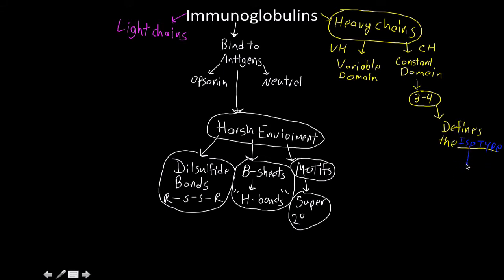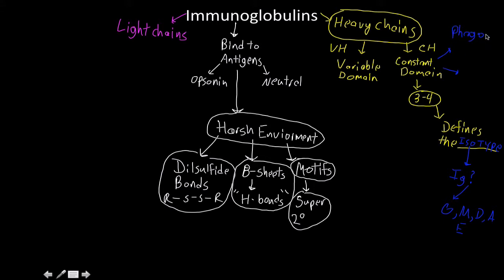The isotype is just the way that we classify the antibody — so Ig followed by a letter. These are IgG, IgM, IgD, IgA, and IgE. The specific isotype associated with the heavy chain uses a Greek symbol: IgG is gamma, IgM is mu, then delta, alpha, and epsilon. The constant domain makes up the Fc region, which is where phagocytes and plasma proteins will recognize it — this is the part that interacts with the immune system.